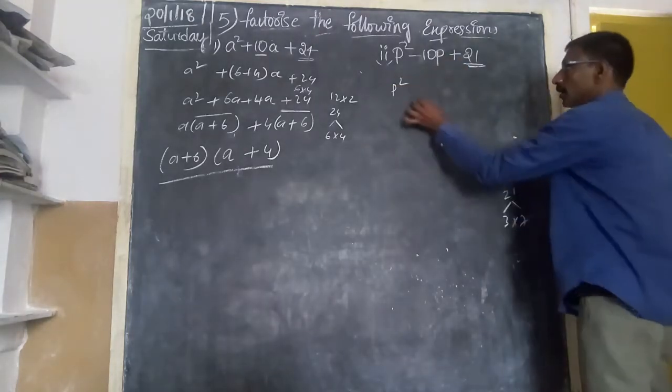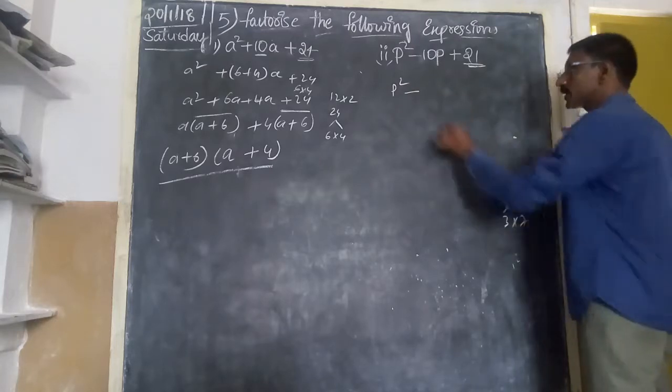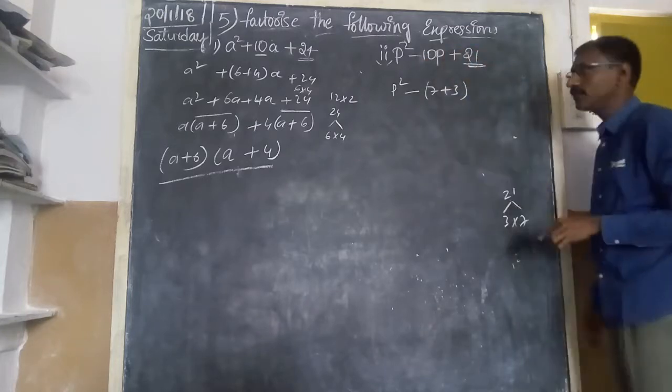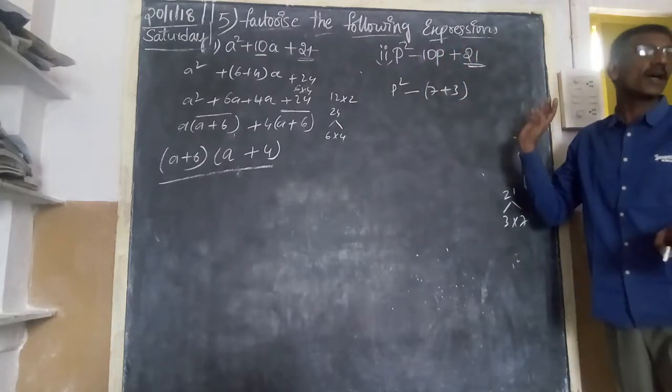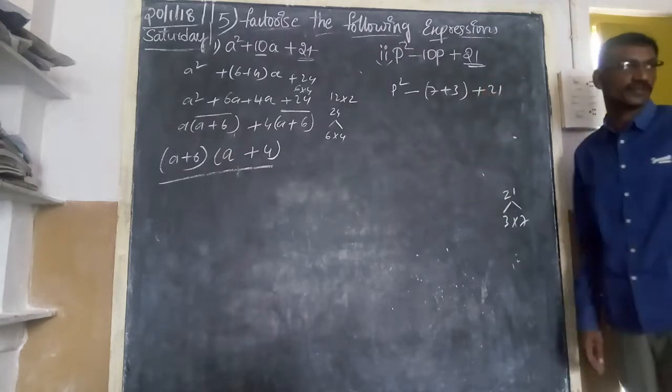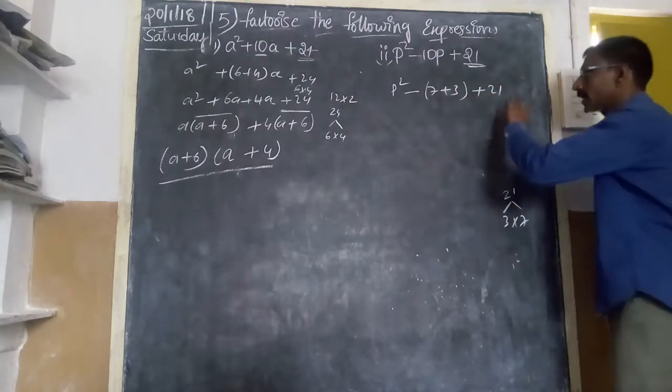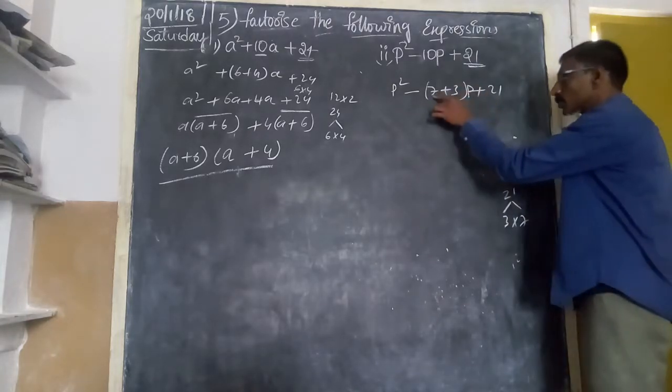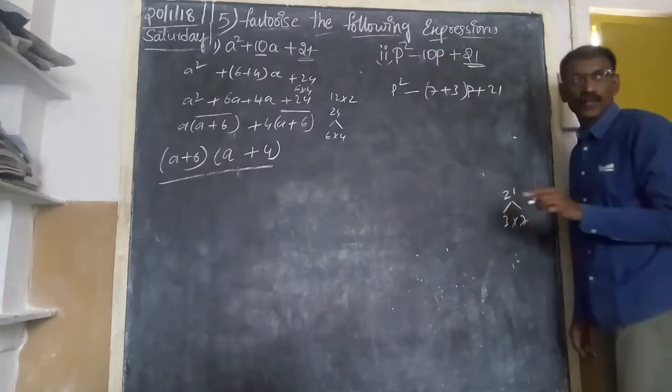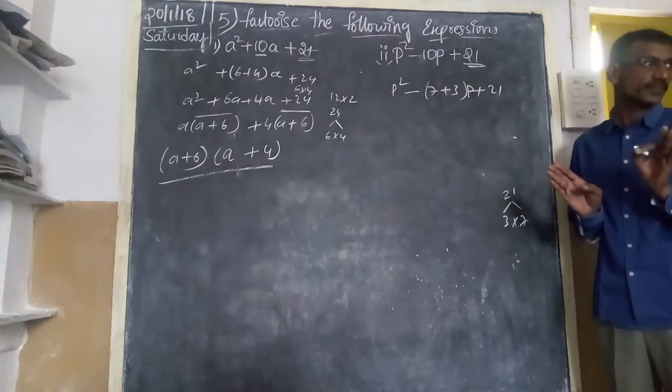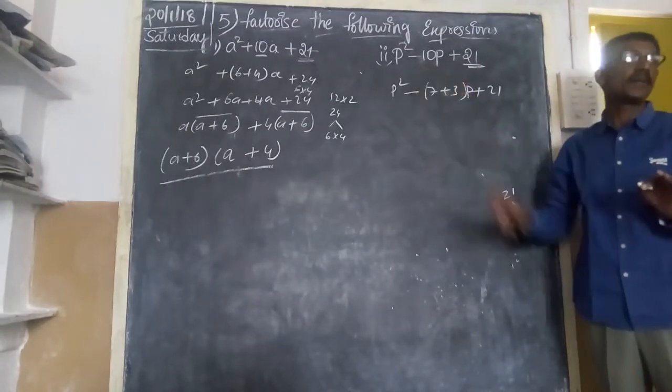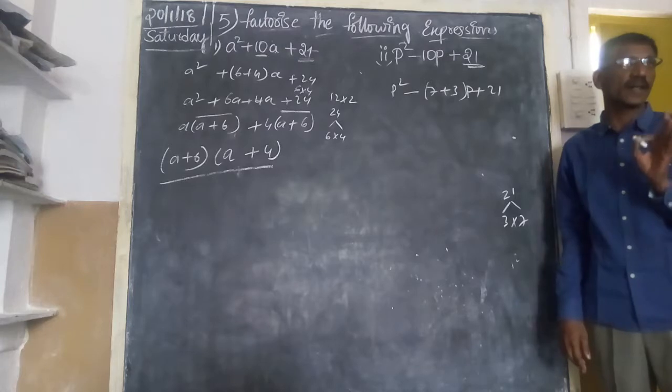So again, you write it down: p² as it is, minus, write as it is. And inside you can take 7 plus 3, which is nothing but 10. 7 times 3 must be at the last. Now constant, is it clear or not? Again, here we have p. Don't forget to write p. So 7 plus 3 is 10, 10 into p. The expression remains the same. But we have taken some little bit of changes in the middle term. That's the reason you call it as splitting of middle term to factorize the given expression.